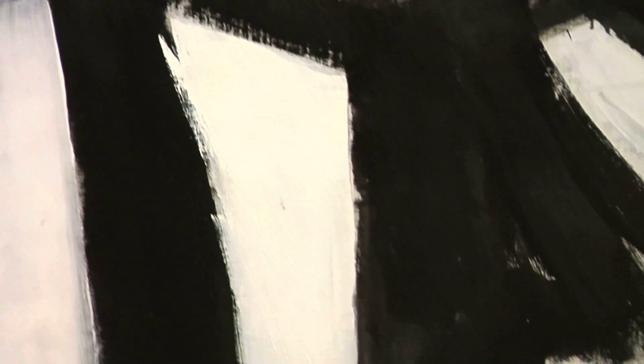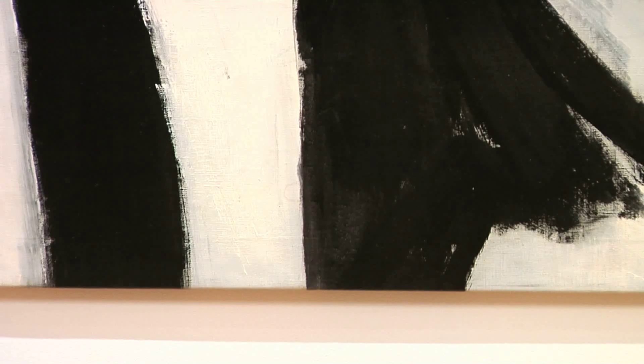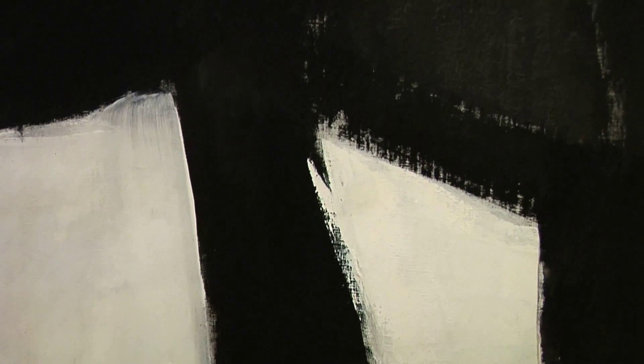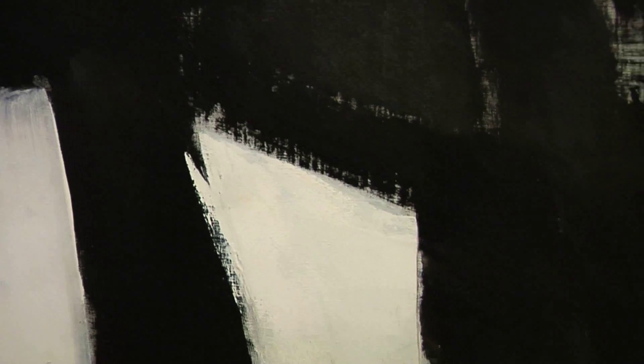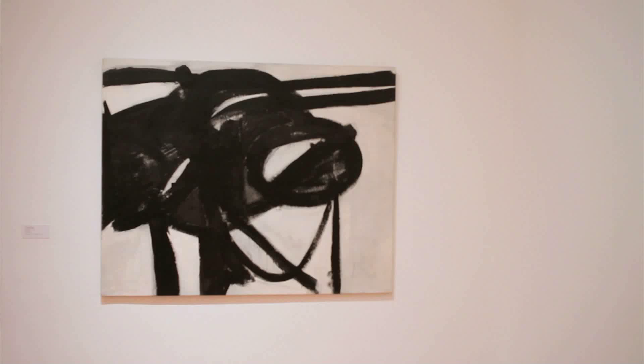Instead, he had abstracted black on white, or in that case, yellow in the phone book, abstracted images out of his source material, again, drawings and the numbers and letters in a phone book. What Kline saw was something that looked a little bit like this.